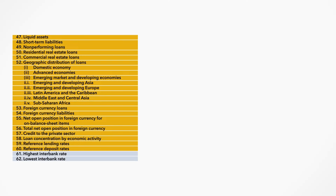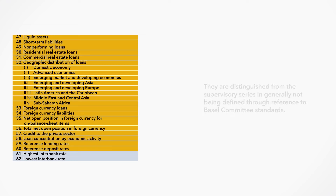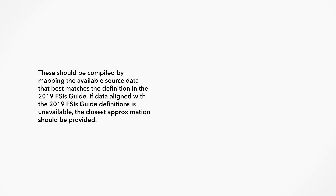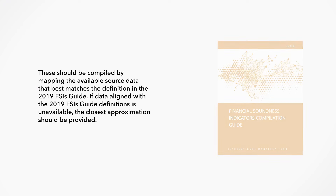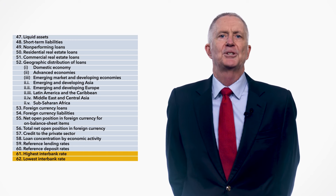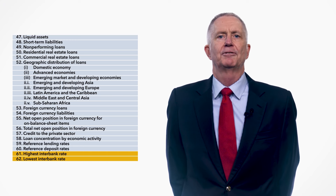Even though most of the series that provide further analysis of the balance sheet of the deposit taker sector are sourced from supervisory data, they are distinguished from the supervisory series by generally not being defined through reference to Basel Committee Standards. Instead, these should be compiled by mapping the available source data that best matches the definition in the 2019 FSIs Guide. If data aligned with the guide's definitions is unavailable, the closest approximation should be provided with the difference noted in the metadata. The remaining two memorandum series for the deposit taker sector are generally not obtained from supervisory data — interbank rates will generally be obtained from the unit in the central bank responsible for financial markets or trading.